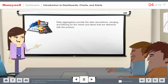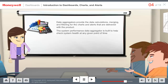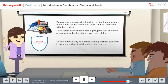Data aggregators are built to merge and calculate information from the VoiceLink database, such as operator information or route information, or from other data sources. The system performance data aggregator is built to check system health at any given point of time. Can these data aggregators be customized, or can I create my own? The good news is you can do both. Vocalect University has online training that will guide you in creating and customizing data aggregators, and I will let you know how to access this training toward the end of our session.